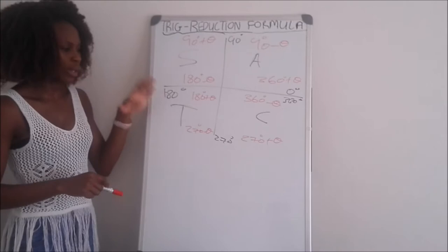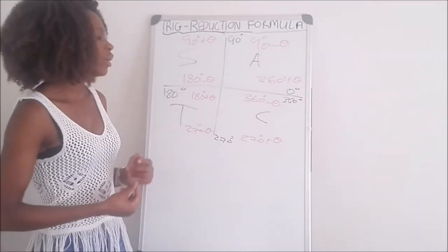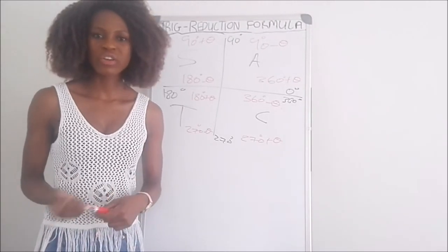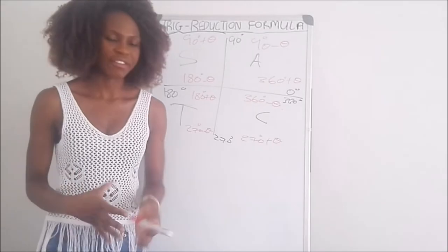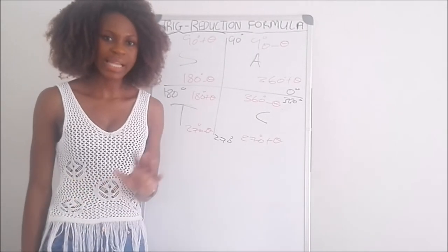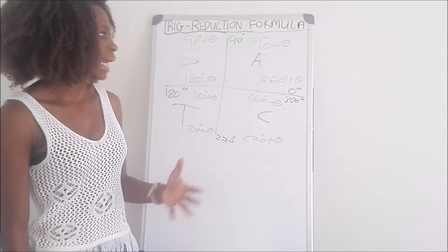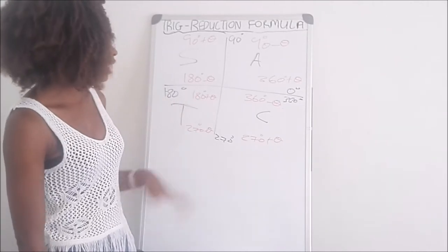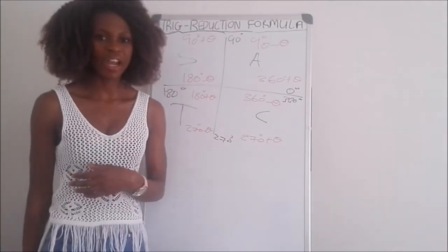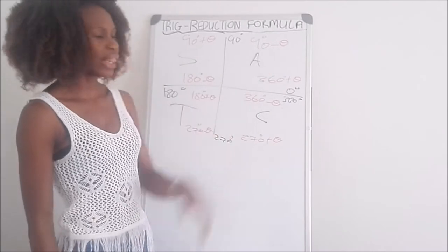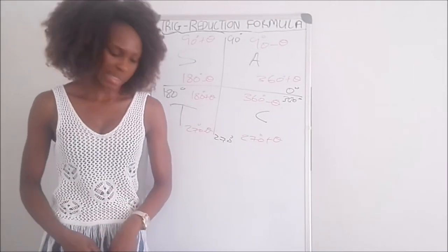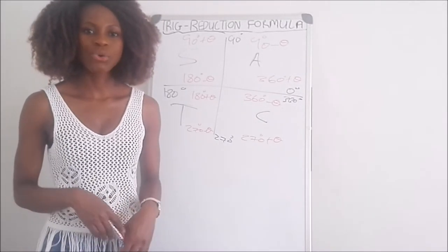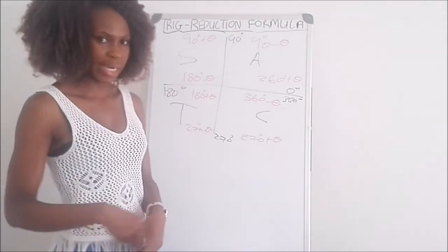You always need this when answering questions on reduction formulas, so you can refer to your Cartesian plane and see which trigonometric ratio is positive in which quadrant. In the first quadrant all of them are positive. When it's 90 minus theta or 360 plus theta, all trigonometric ratios are positive — that means sine is positive, tan is positive, and cos is positive.